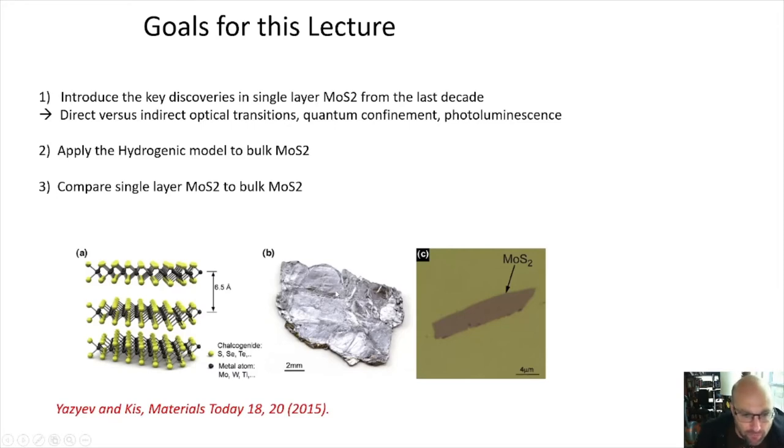Molybdenum disulfide is this shiny, flaky, almost graphitic stuff. It's basically weakly bound layers of molybdenum in the center, sulfur on the outside. They're weakly bound together so you can peel them off with scotch tape down to a single layer, just a sulfur molybdenum sulfur tri-layer almost.